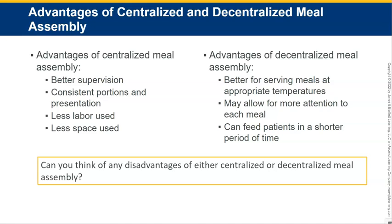Advantages of decentralized meal assembly: better for serving meals at appropriate temperatures. If you have a really large hospital with 30 floors, having two kitchens — one main kitchen and one on maybe the 15th floor running a tray line — means better temperatures for half the hospital, with the other kitchen serving the other half. Temperatures would be in a more stable and appropriate range. Long term, it may allow for more attention to each meal, and patients can be fed in a shorter period of time. A disadvantage of decentralized would be less supervision.